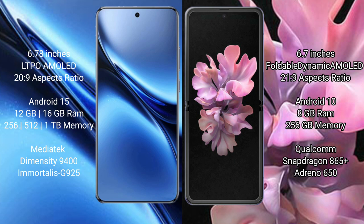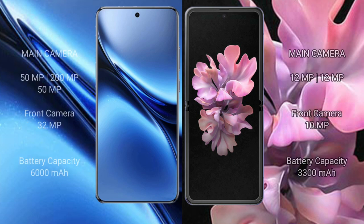The Vivo X 200 Pro is powered by the MediaTek Dimensity 9400 processor with GPU 925, while the Samsung Galaxy Z Flip uses the Qualcomm Snapdragon 865 processor with Adreno 650 GPU. The Vivo X 200 Pro also offers 8GB RAM with 256GB storage.